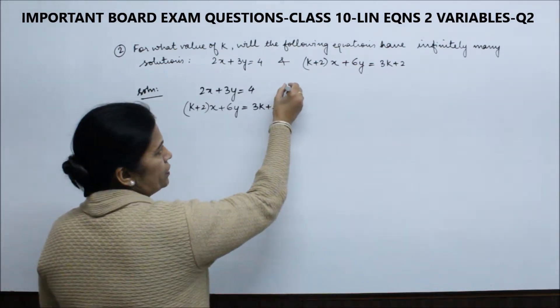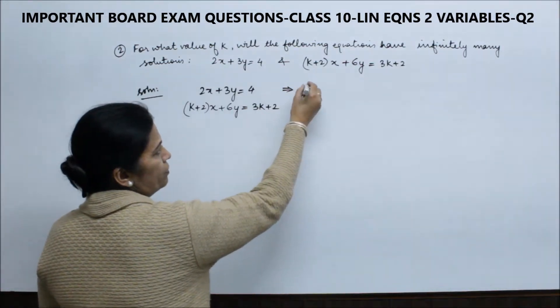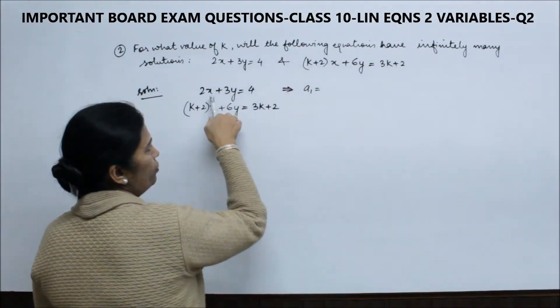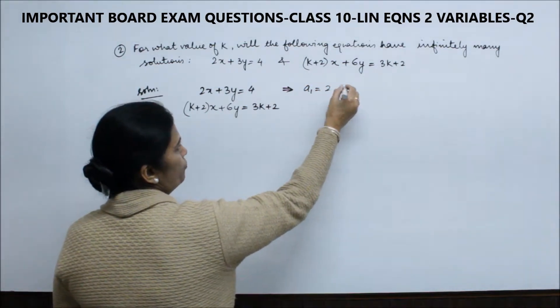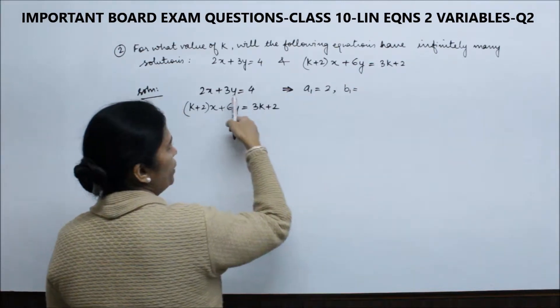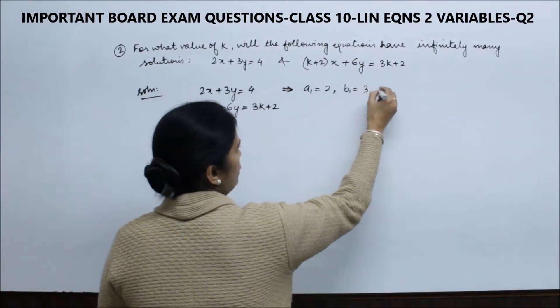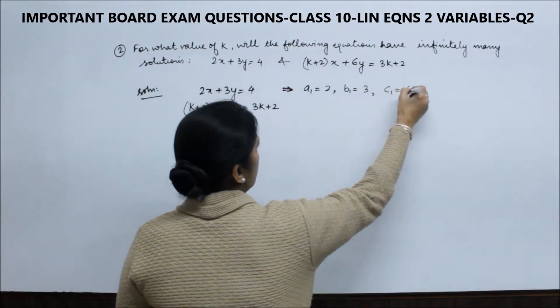Now from here we'll write a1, b1, c1. a1 is what is with x, that is 2. b1 is the coefficient of y, that is 3. And c1 is the constant, which is 4.